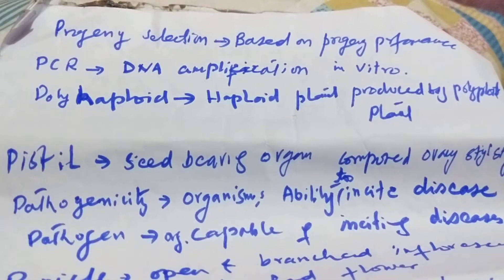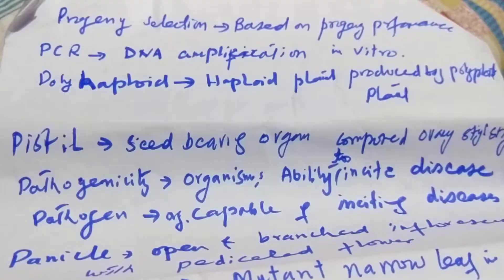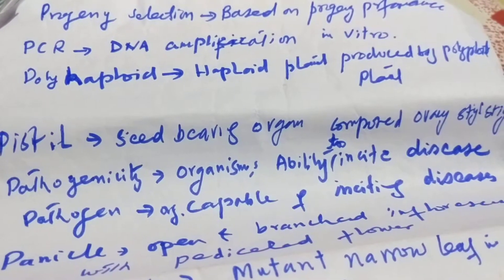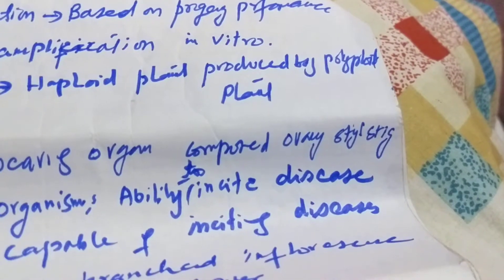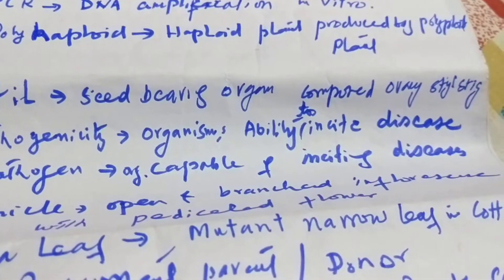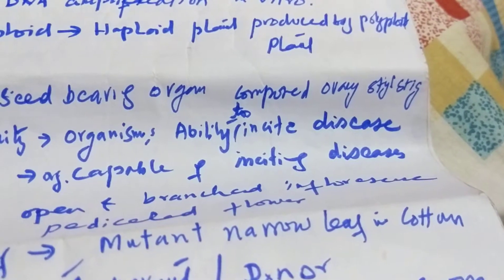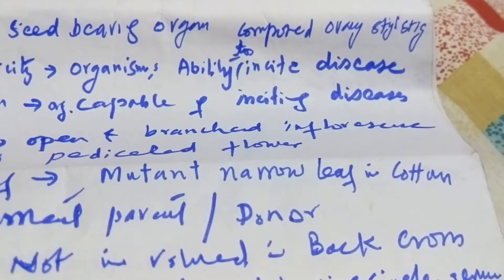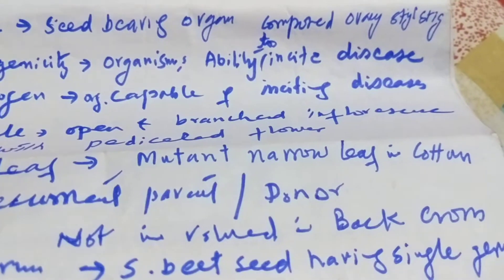Protoplast is the plant cell without a cell wall. Progeny selection is the selection based on progeny performance. PCR is DNA amplification in vitro. Pistil is the seed-bearing organ composed of ovary, style, and stigma. Pathogenicity is the organism's ability to incite disease. Pathogen is an organism capable of inciting a disease.